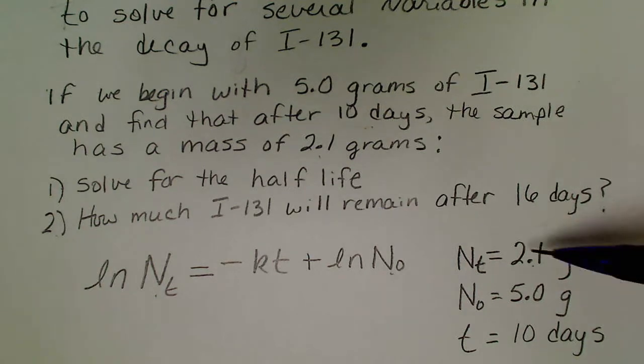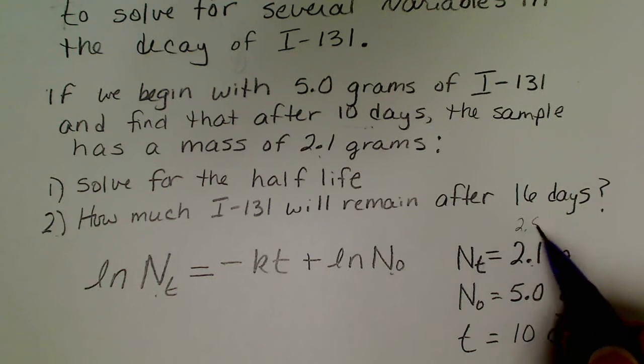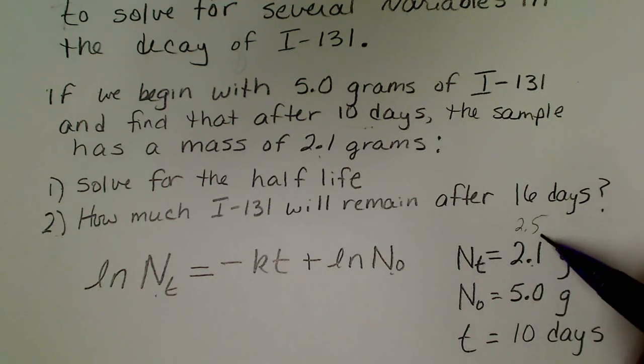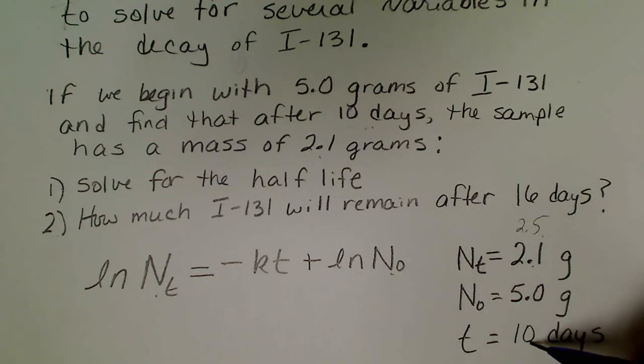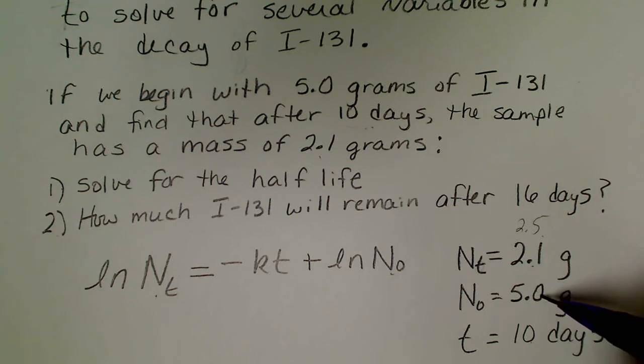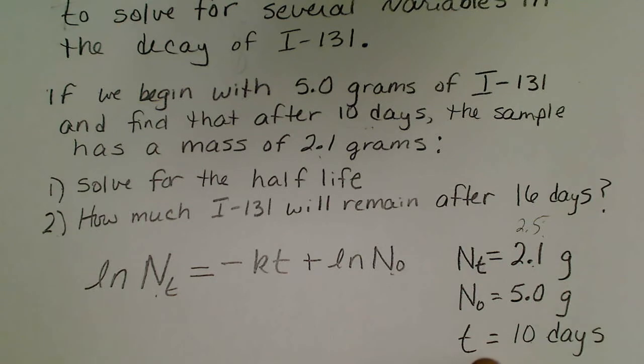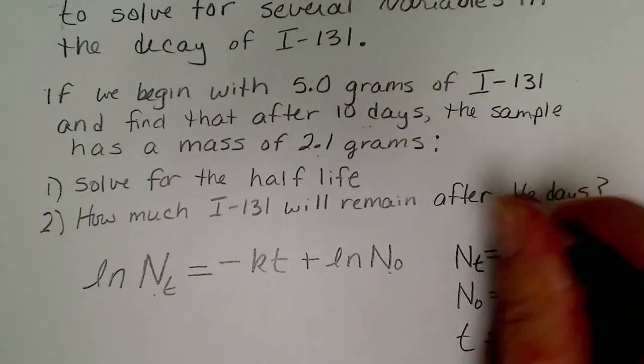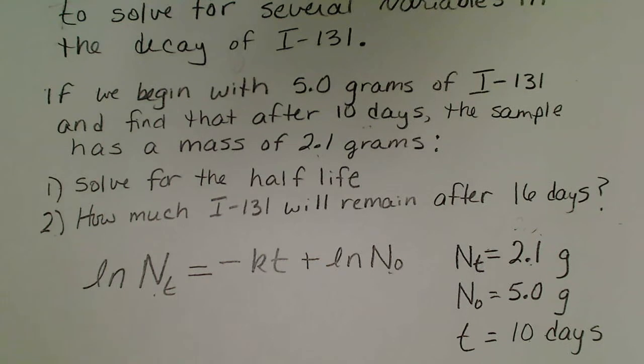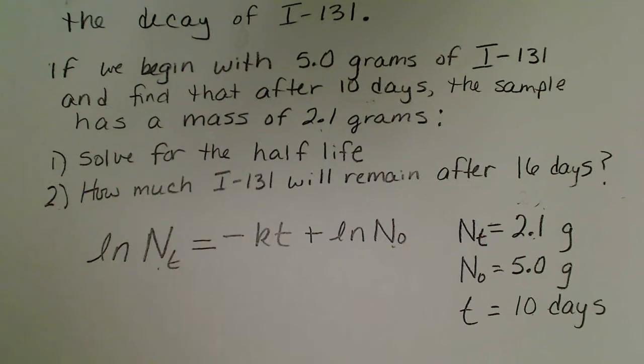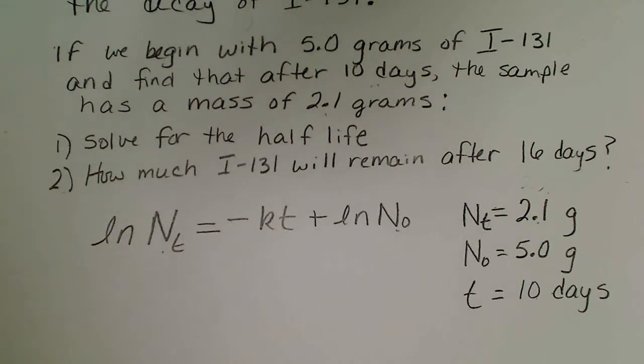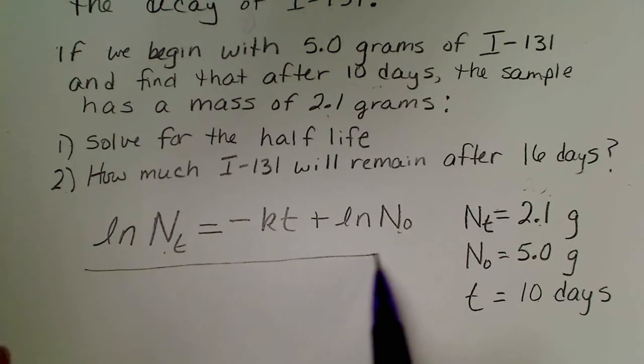If the problem had been worded so that we had 2.5 grams remaining after 10 days, since we started with 5 and had exactly half 10 days later, then that would be the half-life. But we're going to actually have to solve for the half-life.